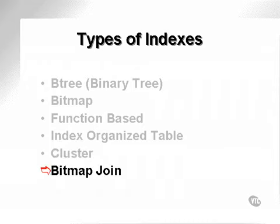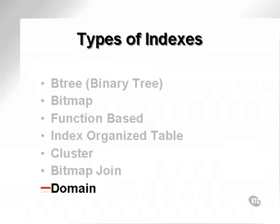A bitmap join is actually a join of a bitmap index and a non-bitmap index. A domain index is specific to a certain type of domain. Domain indexes have specific applications with multimedia, things like maps and GIS systems, large text objects, and that sort of thing.